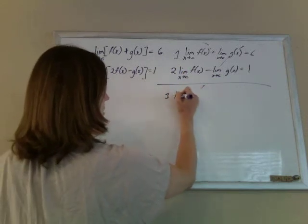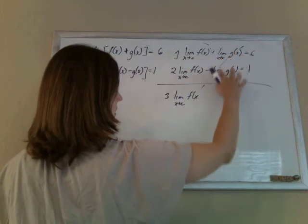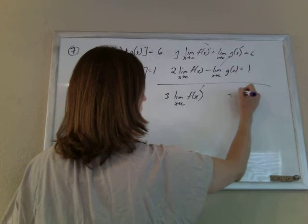The limit of g(x) minus the limit of g(x) goes away like we planned. 6 plus 1 is 7. Last thing to solve for this limit is just to divide by 3.